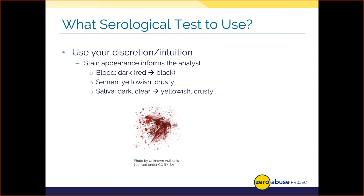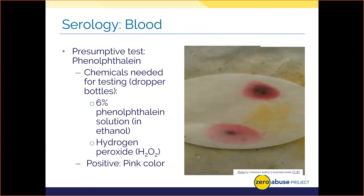Let's look at blood and the different testing measures — presumptive or confirmatory — for each bodily fluid type. The presumptive test widely used today for blood is the phenolphthalein test, also called the Kastle-Meyer test. The reagent targets heme from hemoglobin in blood. Hemoglobin is the oxygen-binding component in red blood cells. Please note that heme is not exclusive to humans, so we cannot assume that blood detected is human blood — it could be from a suspect, victim, or even an animal.